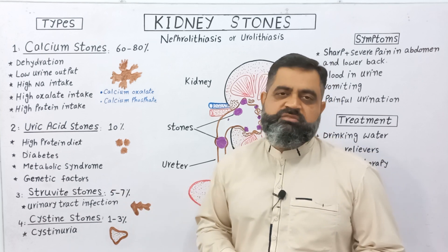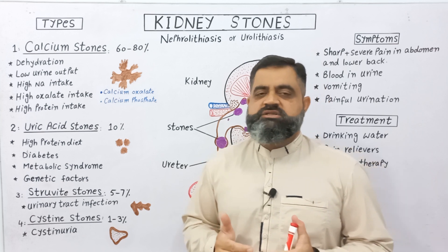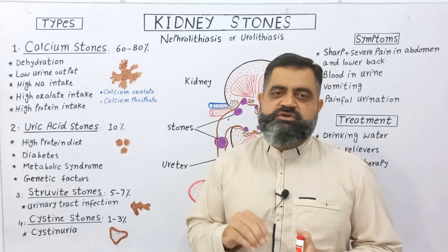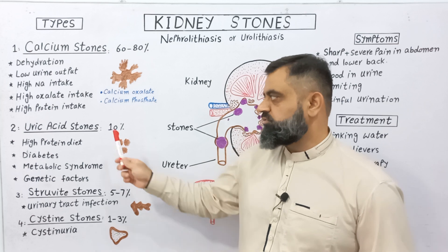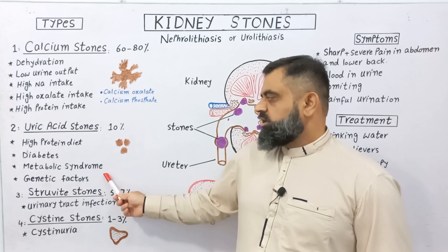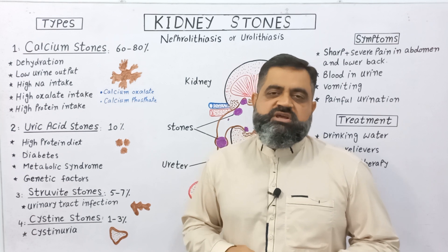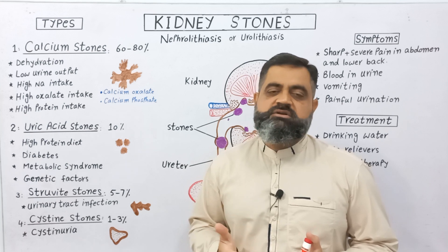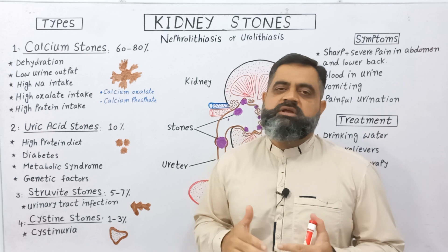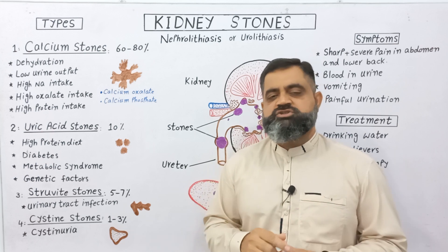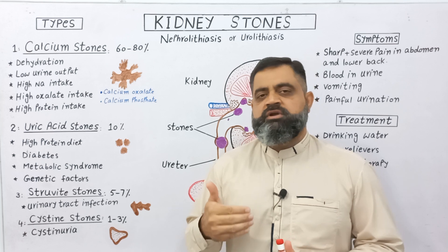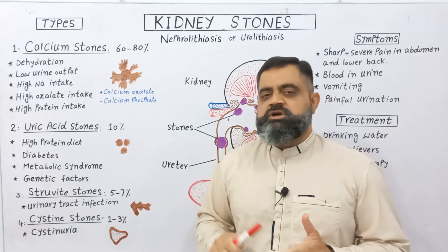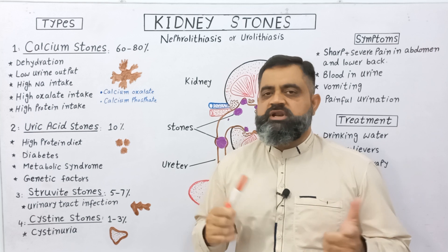Sixth, metabolic syndrome, during which certain metabolites are accumulated in the body, and especially uric acid can accumulate inside the kidney and result in the formation of uric acid stones. There are also certain genetic factors which can lead to stone formation, because even if you are taking a very good diet, are healthy, and exercising, if you have inherited genes for the formation of stones from your ancestors, parents, or grandparents, that genetic factor will lead to stone formation.